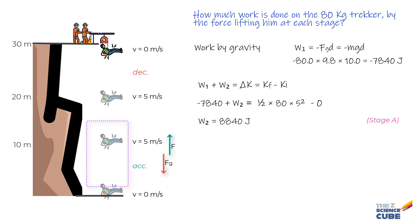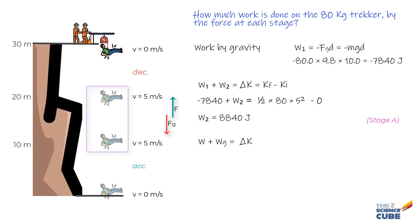Stage B is where the speed is constant and therefore, we can simply use the formula W plus work done by gravity equals delta K but since the velocity does not change delta K is 0 or W equals minus WG which equals minus minus 80 into 9.8 into 10 which equals 7,840 joules.